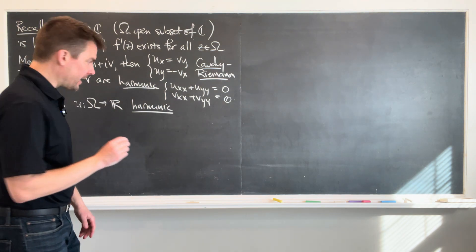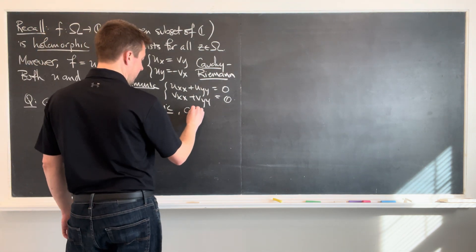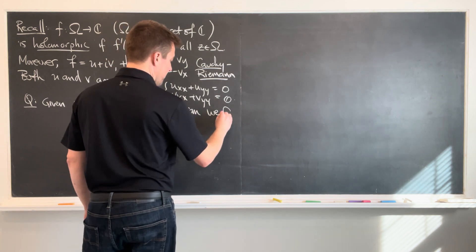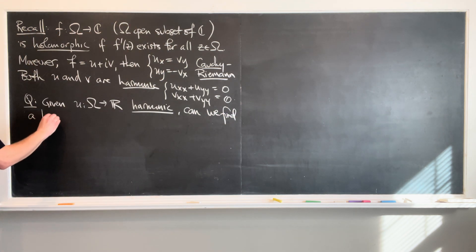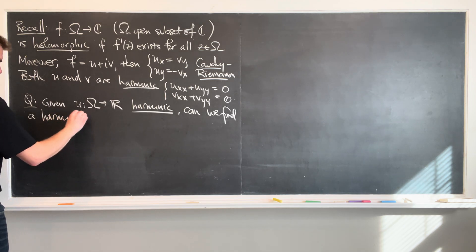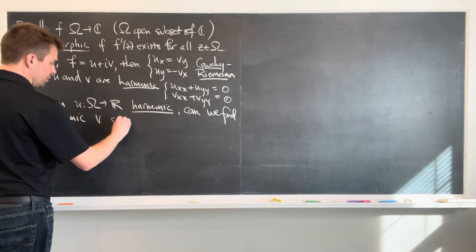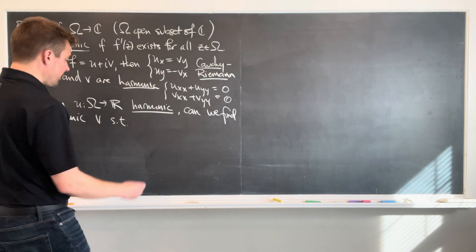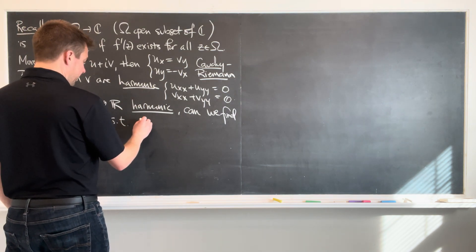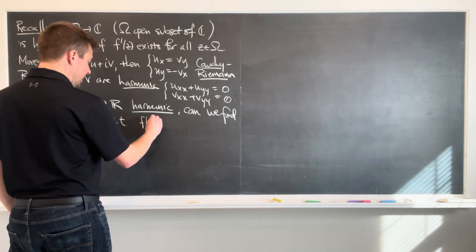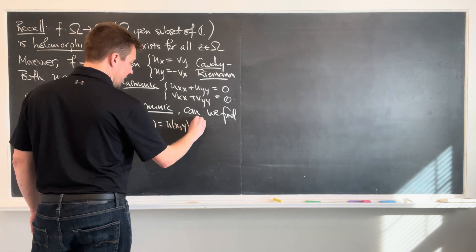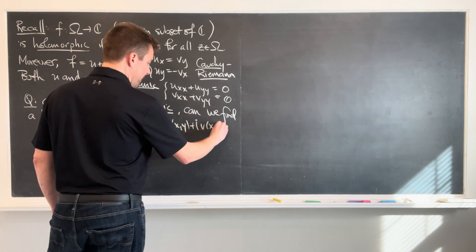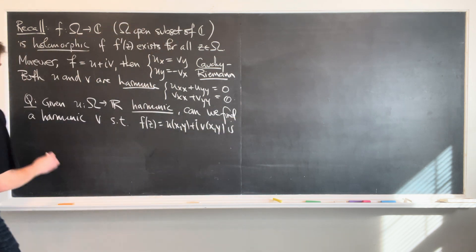Given u which maps omega into R, harmonic, so I'm given a harmonic function, can we find a harmonic v such that u plus iv, such that this function f of z, which is u of x, y plus i v of x, y,